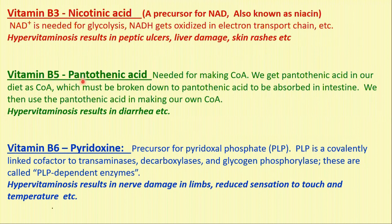Vitamin B5 is pantothenic acid, which is needed for making coenzyme A. We get pantothenic acid in our diet as coenzyme A, which must be broken down to pantothenic acid to be absorbed in the intestine. We then use the pantothenic acid to make our own coenzyme A. Its hypervitaminosis results in diarrhea, etc.